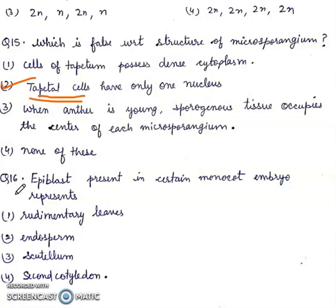Question 16. Epiblast present in certain monocot embryo represents: rudimentary leaves, endosperm, scutellum, or second cotyledon. Right answer will be second cotyledon.